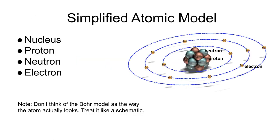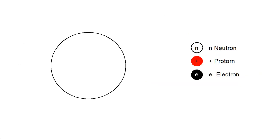Our definition talks about metals being a particular type of element, so we need to take a step back and refresh our memories with a little bit of elementary chemistry. We're only going to hit the high points here — we're not going to talk about orbitals. We'll treat the Bohr model as the way things are; it's a good schematic anyway.